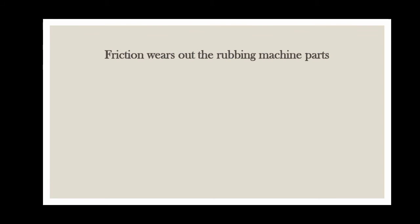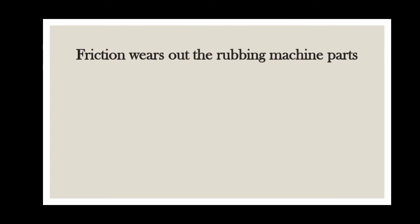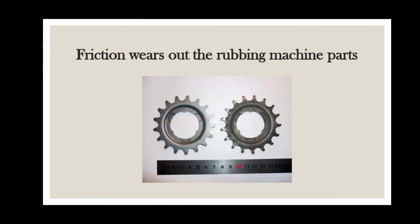The next disadvantage: friction wears out the rubbing machine parts. There are many moving parts in machines like gears, etc., which rub against each other constantly. Due to friction, the rubbing parts of a machine wear out gradually.